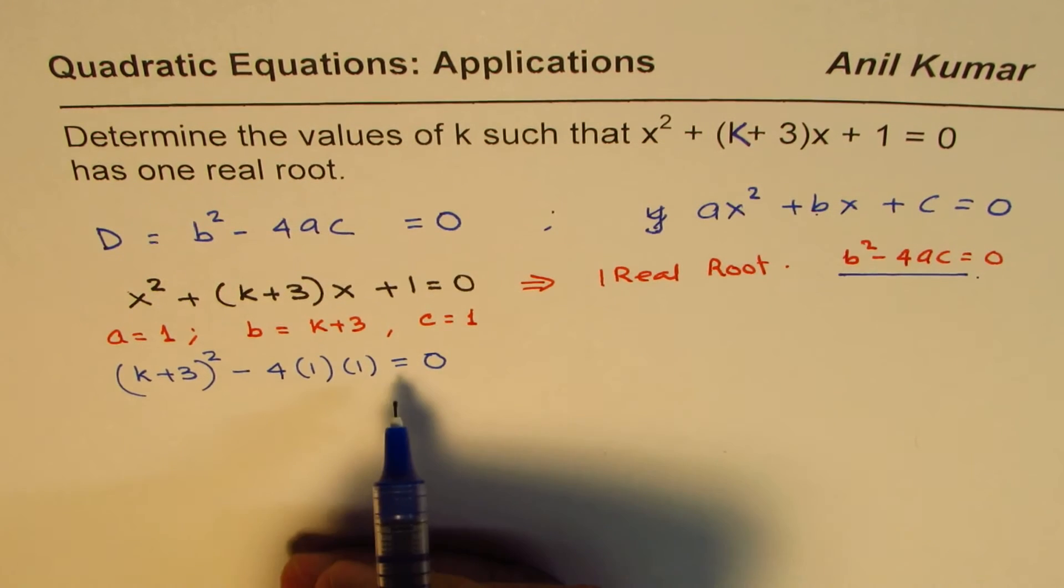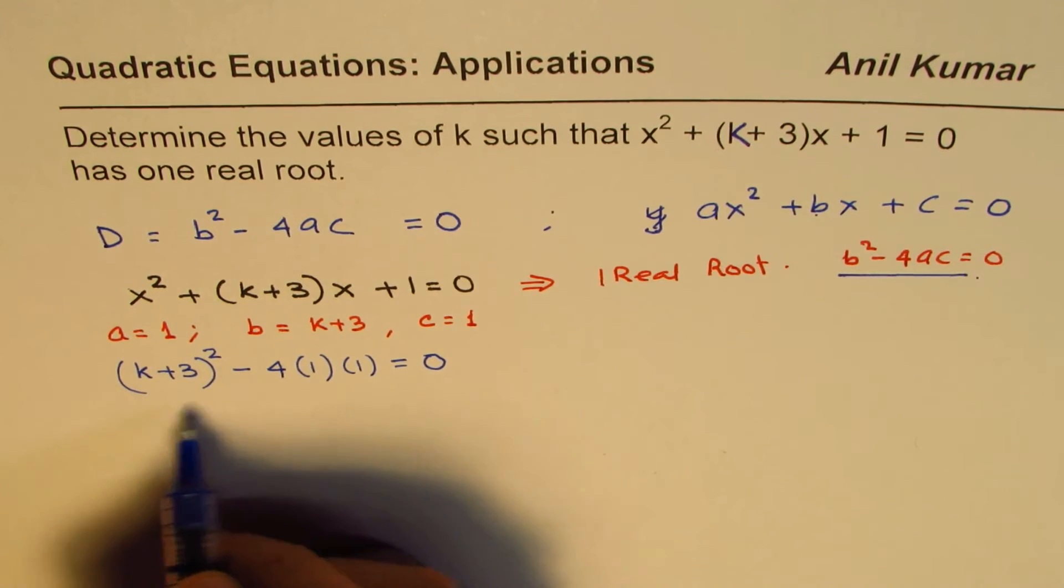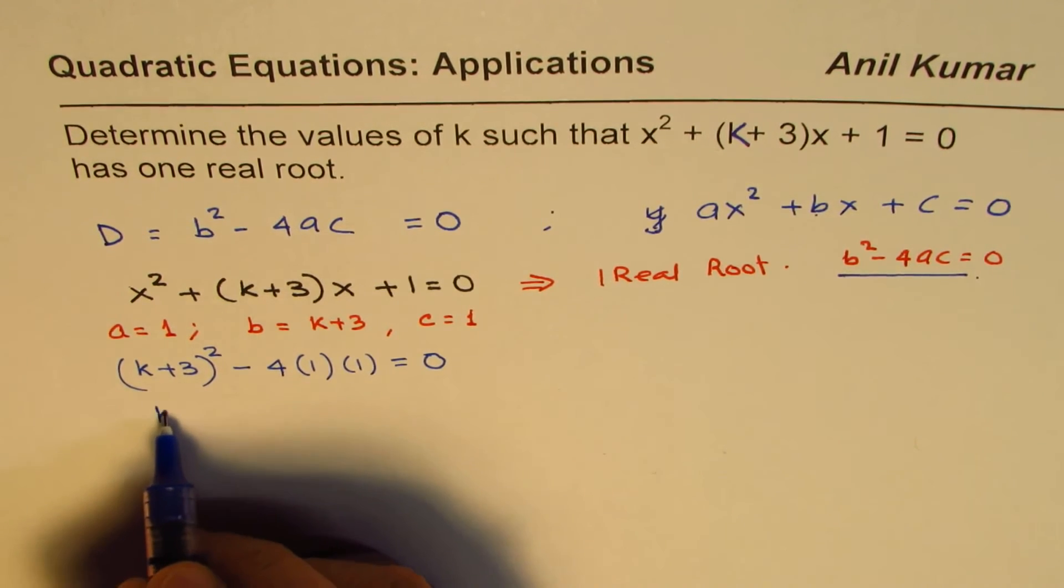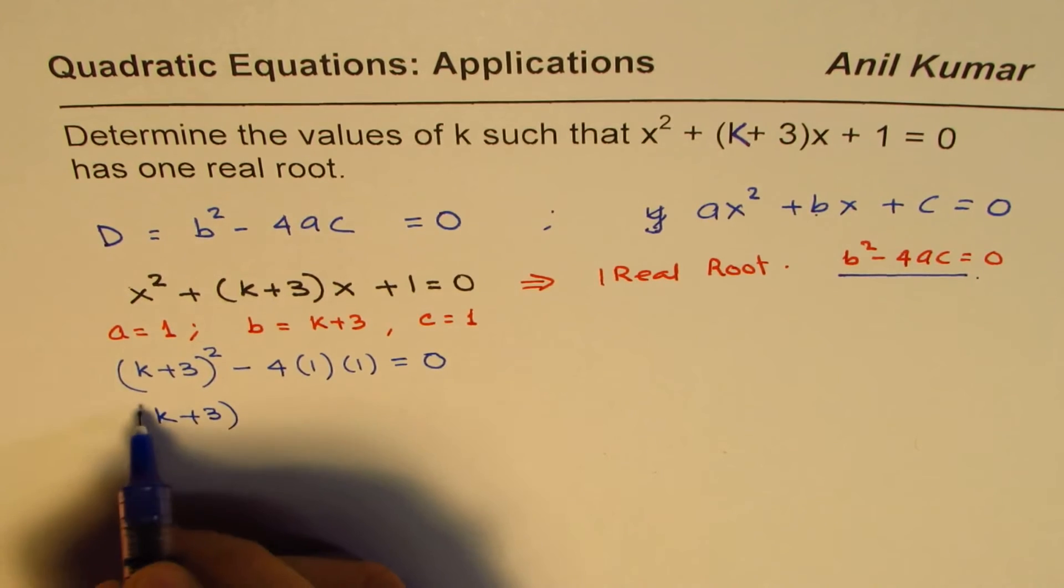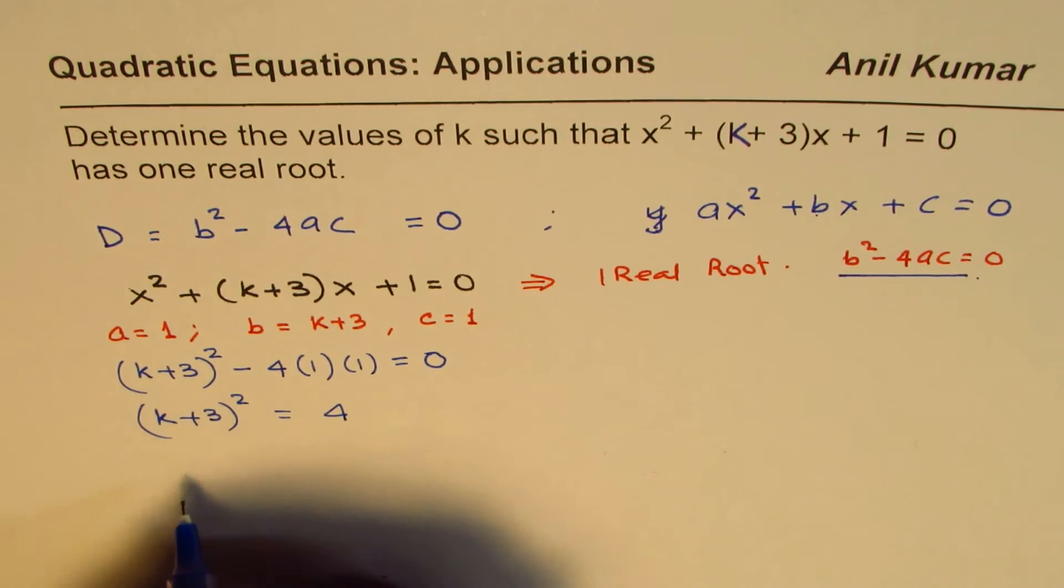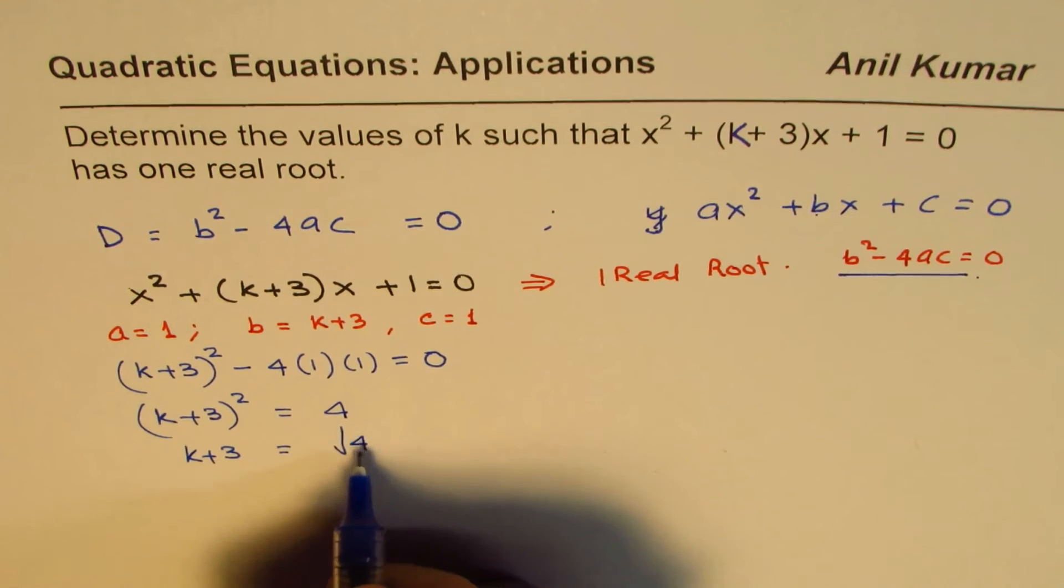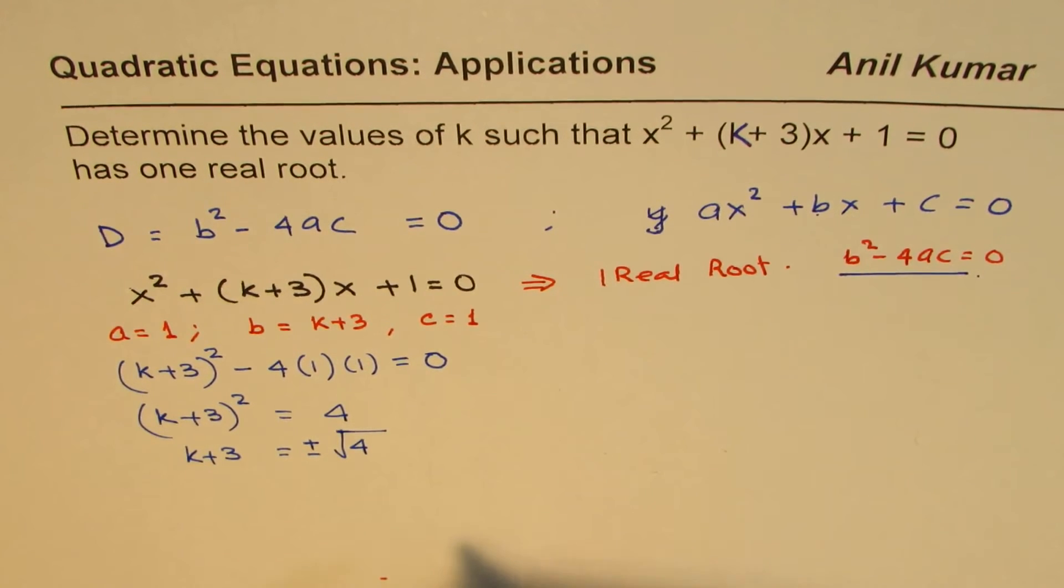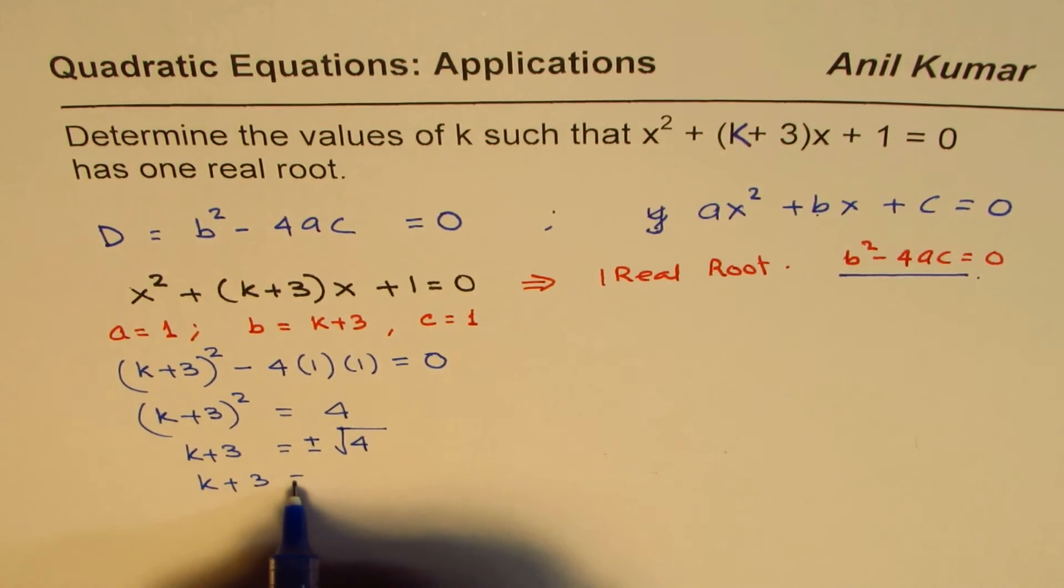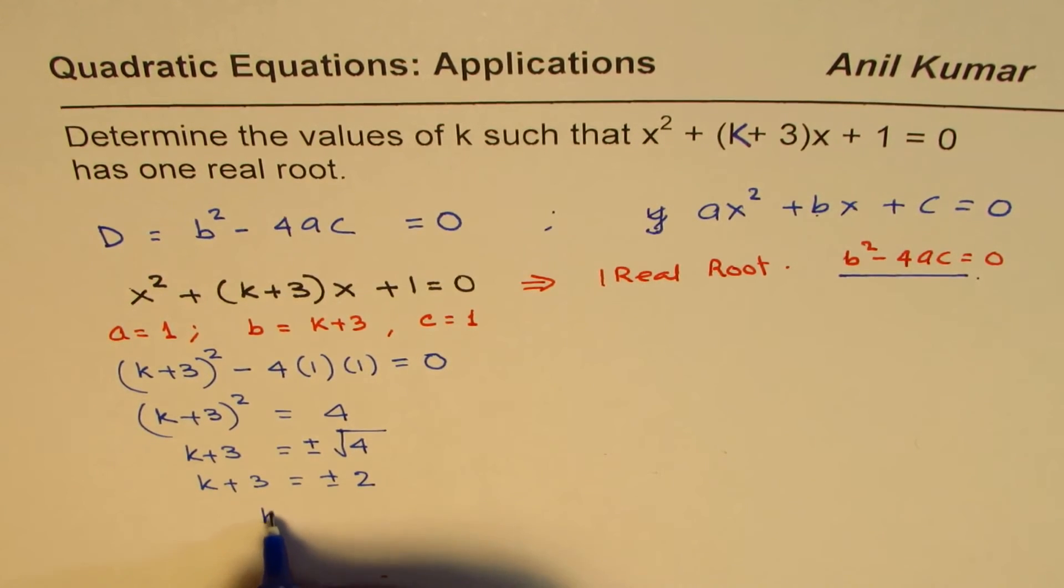Now you can actually solve this equation and find the answer. Here is the solution: we can take this term to the right side, so we have (k+3)² = 4. Then we can square root, so we have k+3 = ±√4. Whenever you do square root, plus and minus, right? So we have k+3 = ±2.